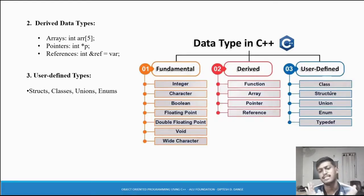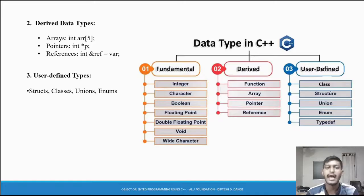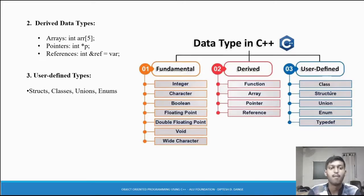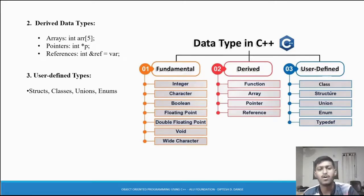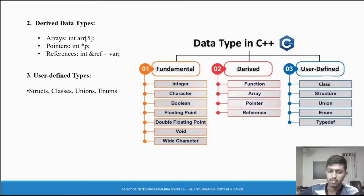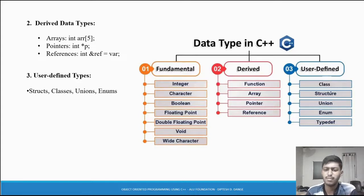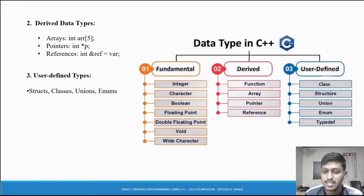The same concepts you can use in C++. What are the data types? Arrays - collection of elements - pointers, and references. Arrays and pointers are the same as in C. References we will see when needed. These are the derived data types in C++, same as in C. You can understand the detailed concept from what you already studied in C.